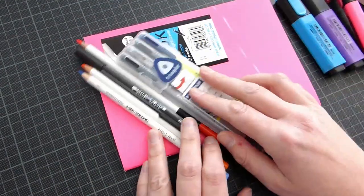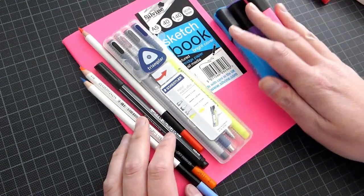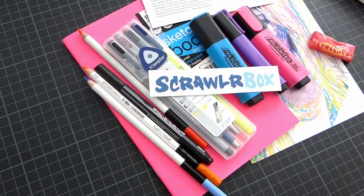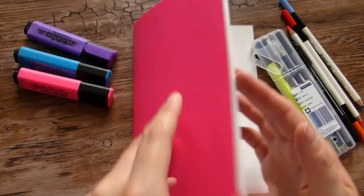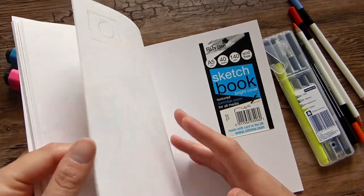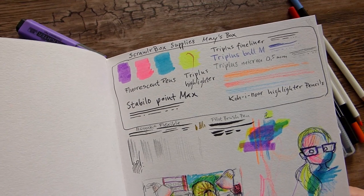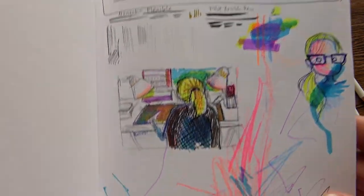We also got a Stabilo point max pen and three Staedtler fluorescent pens, and a Silvine Field sketchbook with 40 pages, A5 size with 140 GSM.